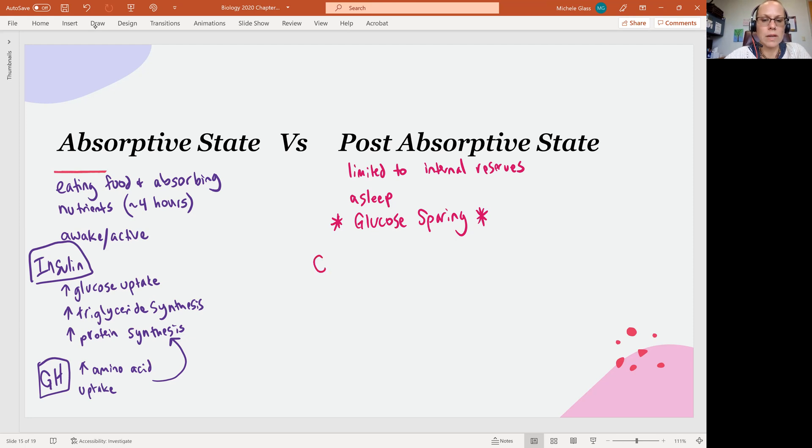And we see post-absorptive state is going to be under the control of the hormone glucagon, which is like the antagonistic hormone to insulin or the opposite hormone. This one is released by the alpha cells of the pancreas. This one is going to do reverse type of activity. So we're going to break down our triglycerides so that we can release those fatty acids to make ATP. We're going to increase our glycogen breakdown. Glycogen is the way that our skeletal muscle is able to store glucose. So we're basically here dipping into our fatty acid reserves and our glucose reserves.